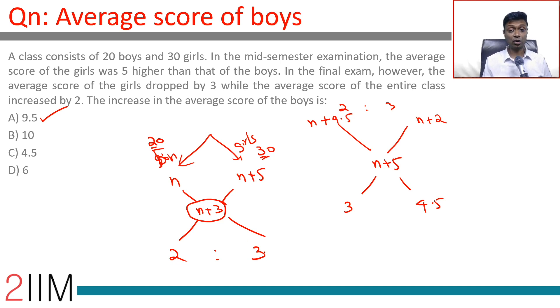Then we know the average score of the girls dropped by 3: n plus 5 becomes n plus 2. The average score of the entire class increased by 2: n plus 3 becomes n plus 5. So you're mixing something and n plus 2 in the ratio 2 is to 3 to get n plus 5. This something should have been n plus 9.5. From n, we add 9.5 to go to n plus 9.5.